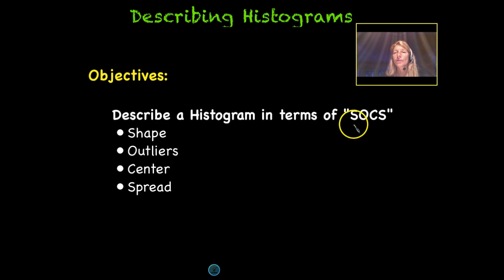So use the term SOCS to help you in describing the shape, whether there's any outliers, looking at the center, where is the center? So in other words, where is the mean in relation to the median? And then finally, the spread. Estimate if you think the data is fairly spread out or very closely clustered together.